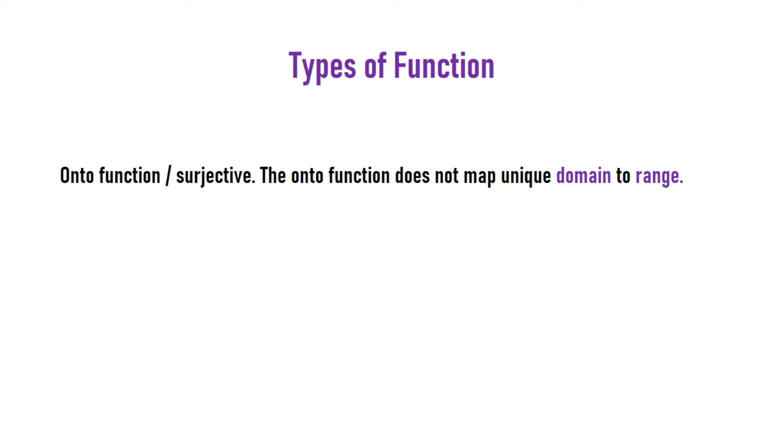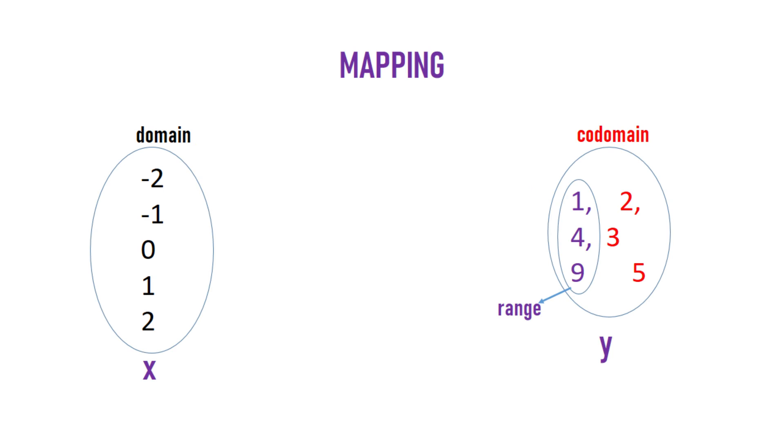The next type is the onto function or surjective. The onto function does not map unique domain to range. This means two or more values of x can have the same value for y. Let's try an example: take the domain to be 2, 1, 0, -1, and -2.